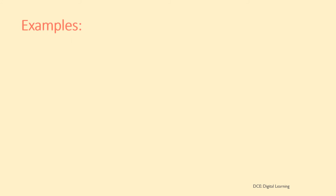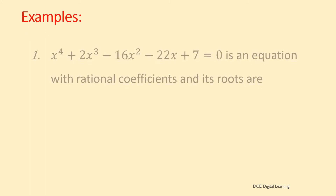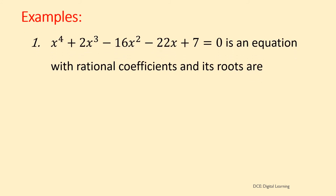Let us look at examples now. Example 1: x⁴+2x³−16x²−22x+7=0 is an equation with rational coefficients and its roots are 2+√3, 2−√3, 3+√2, 3−√2. Clearly, irrational roots appear in conjugate pairs.